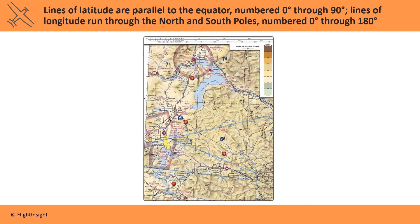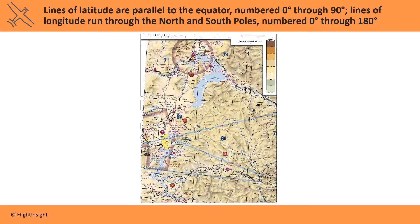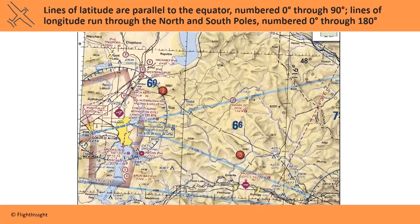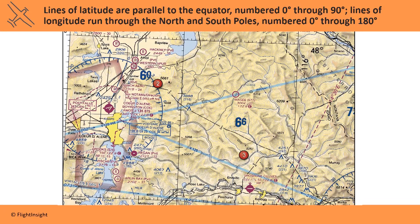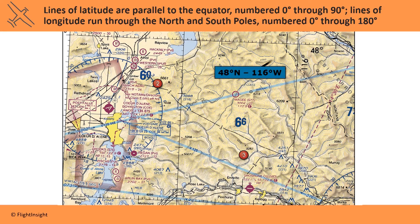Charts use lines of latitude and longitude to help determine position. Lines of latitude are parallel to the equator and are numbered from 0 degrees through 90 degrees. Lines of longitude run through both the north and south poles and go from 0 through 180 degrees. The intersection of these lines is a coordinate. This coordinate in northwest Idaho is 48 degrees north, 116 degrees west.